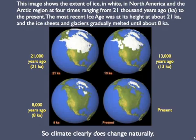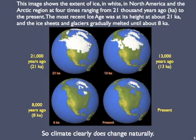This image shows the extent of ice, in white, in North America and the Arctic region at four times, ranging from 21,000 years ago — abbreviated 21KA — to the present. The most recent ice age was at its height at 21,000 years ago, and the ice gradually melted until about 8,000 years ago. So not only do we know that climate does change naturally, we can address how long changes take — in this case, over 10,000 years to move from an ice age to a warm period.